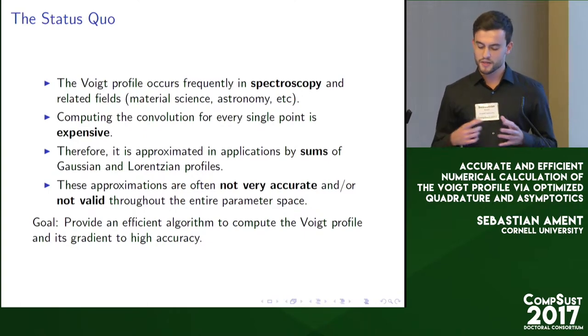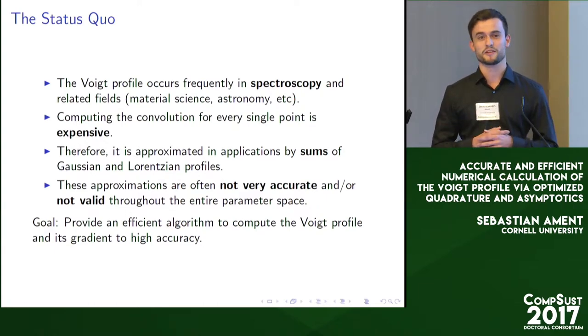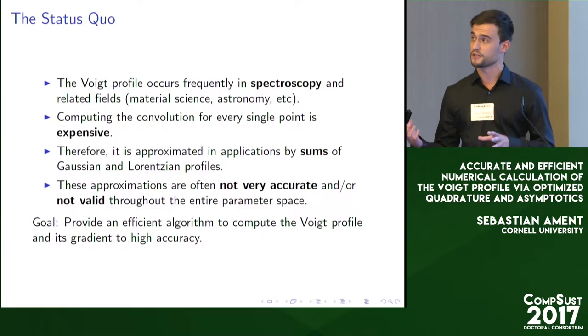For this reason, previous researchers have approximated this line shape with sums of Gaussians and Lorentzians instead of the convolution. This is, however, not very accurate. And if it is accurate, it's mostly not valid throughout the entire parameter space of this function.